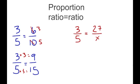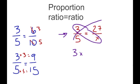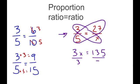When you have an example with a missing number, you can use cross products to figure it out. You would do 3 times x, which is 3x, and 5 times 27, which is 135. So you end up with 3x equals 135. Then you just solve: divide by 3 on each side, and x is equal to 45.